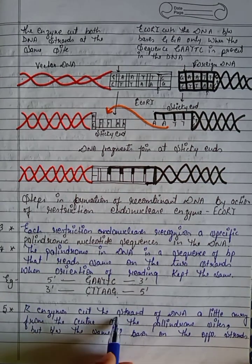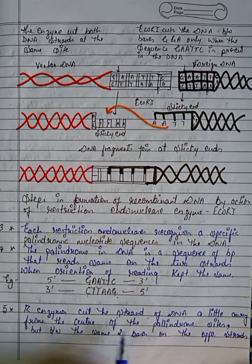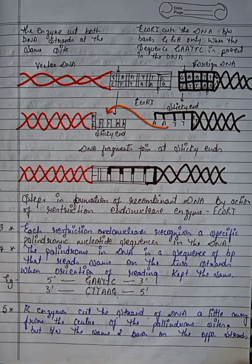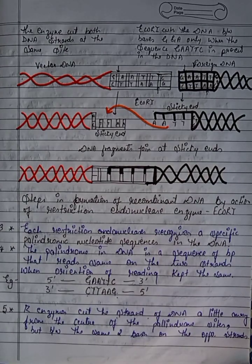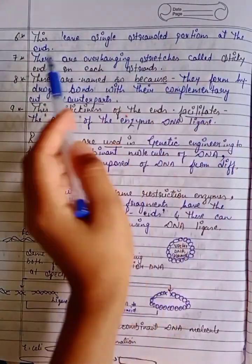Restriction enzymes cut the strand of DNA a little away from the center of the palindromic site, but between the same two bases on the opposite strand. So the enzyme cuts slightly off-center from the palindromic site, leaving cuts at the same relative position on each opposite strand.